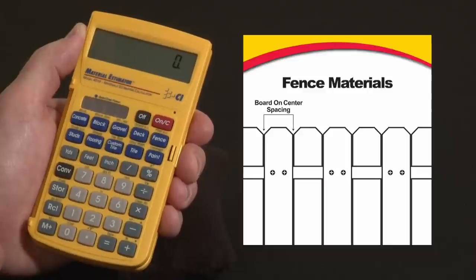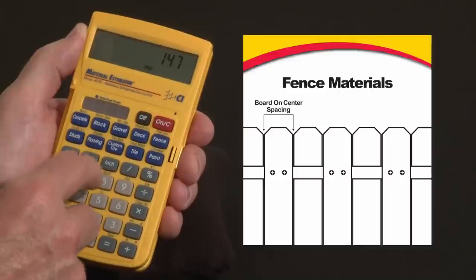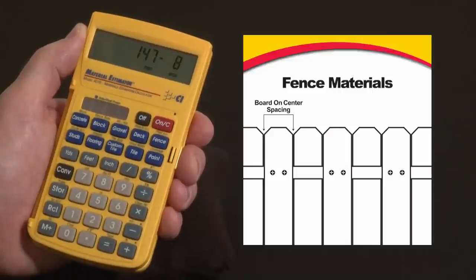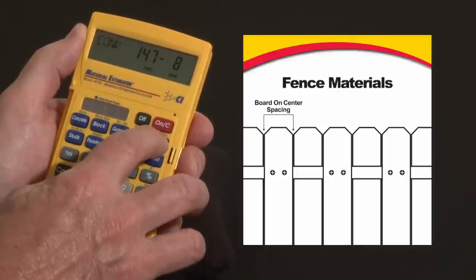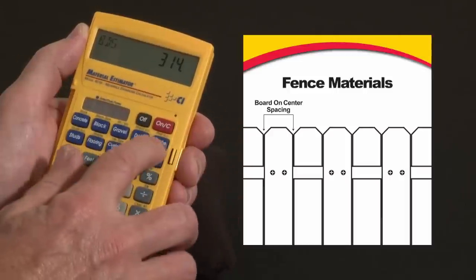Say we have a property line fence across the back of a lot that's 147 feet eight inches long and we want to convert to fence and find our fencing material needs. Hit convert fence. First press tells us we're going to need 314 fence boards.